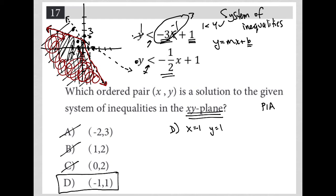Same thing for this bottom one. Replace y with positive 1. Replace x with negative 1. Negative 1/2 times negative 1 is positive 1/2. Positive 1/2 plus 1 is 1 and a half. And it is true that 1 is less than 1.5 or 1 and a half. So that also makes that true.